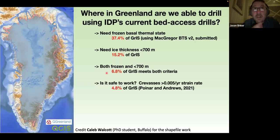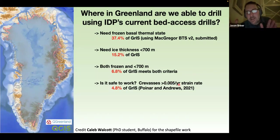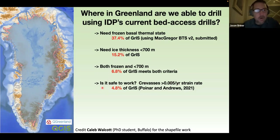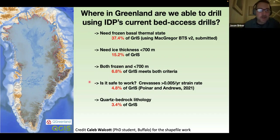We can also ask whether it's safe to work — we're not going to set up the ASIG drill rig over a crevasse region. I worked with colleague Kristin Poinar in Buffalo to create a strain-rate map across Greenland and exclude areas with higher strain rates indicating crevassing. That gets us down to about 5%. Then we need to figure out where there might be quartz-bearing bedrock — knowledge of bedrock geology on Greenland comes only from around its perimeter where bedrock is exposed, plus the GISP2 site.